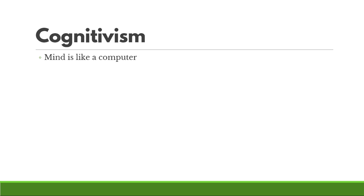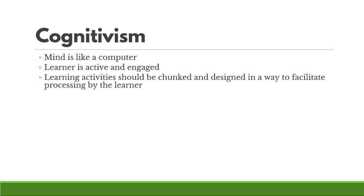Cognitivism: the mind is like a computer in this theory — an overly simplistic explanation, but a good way to start thinking about how people think. New information is coded and structured to fit in with existing information. In this theory, the learner needs to be active and engaged, and everything should be chunked and designed to facilitate processing by the learner. Your learner is unique — they have a unique worldview, unique experiences, and bring an existing set of knowledge, skills, and opinions to any learning situation. It's important to structure the learning in a way that makes it as easy as possible for them to process and incorporate what they already know.